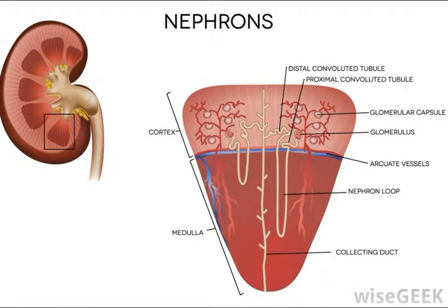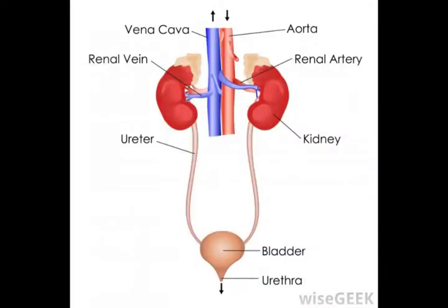The third method of reabsorption is passive transport. Passive transport functions based on the permeability of the membrane and does not use chemical energy. The mineral concentration in the tubules is high, and the concentration in capillaries is low. Through passive transport, the minerals move into the peritubular capillaries. Transport stops when the mineral concentration in the capillaries is the same as the concentration in the tubules.